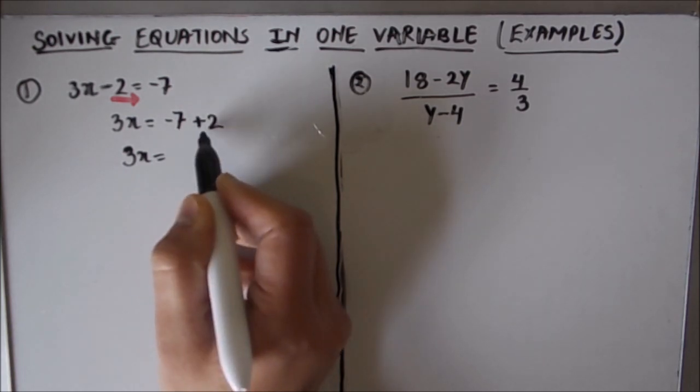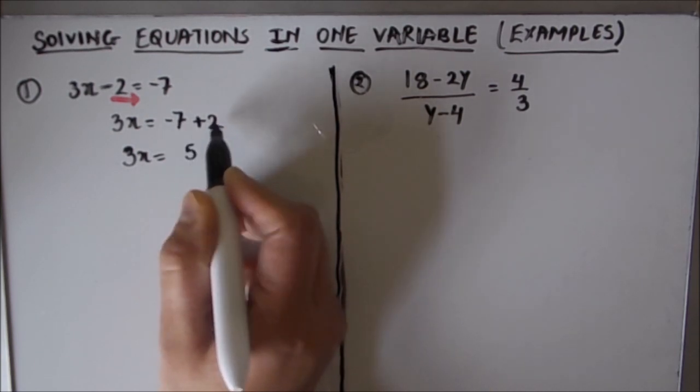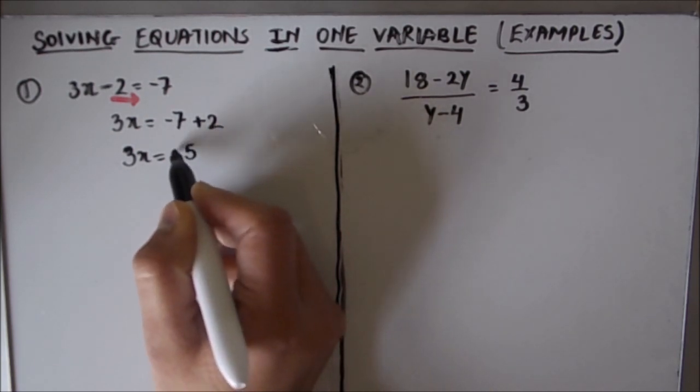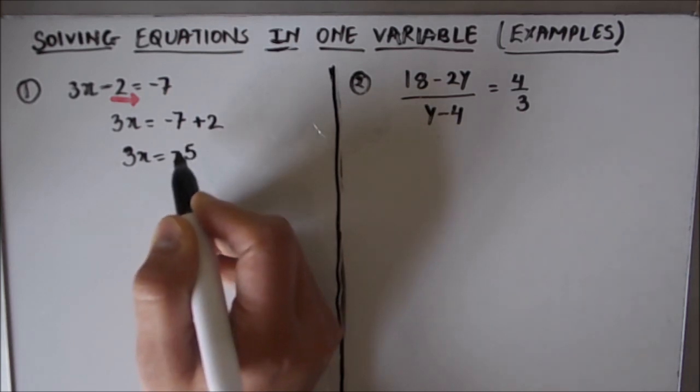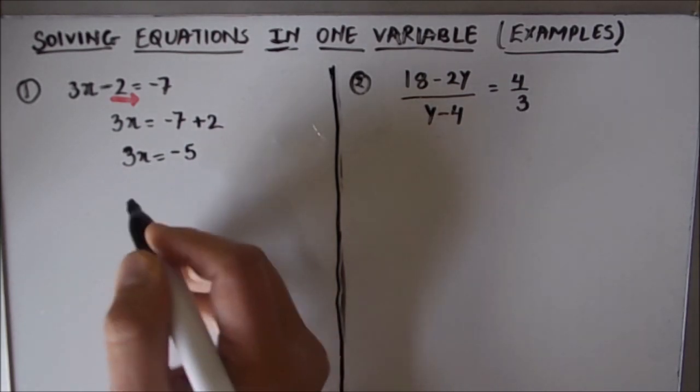Minus and plus will give you minus. So the operation will be minus between the two numbers, which is 5. 7 minus 2 is 5, and the sign will be of the bigger number, bigger numerical digit, which is 7. So 3x equals minus 5.